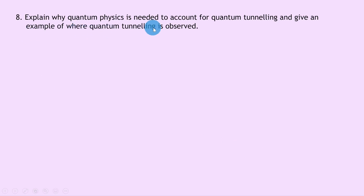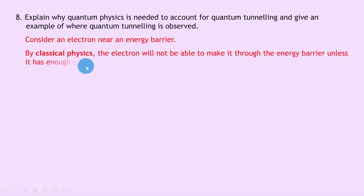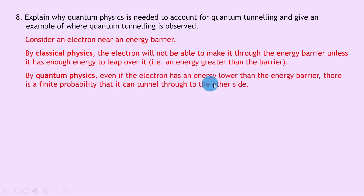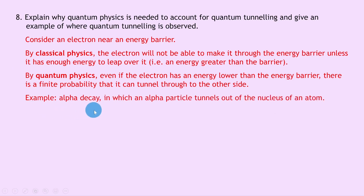Question 8 says to explain why quantum physics is needed to account for quantum tunneling and give an example of where it is observed. Consider an electron near an energy barrier. By classical physics, the electron will not be able to pass through the barrier unless it has enough energy to leap over it — i.e., an energy greater than the potential energy barrier. By quantum physics, however, even if the electron has energy lower than the barrier there is a finite probability it can tunnel through to the other side, because in quantum physics we treat the electron as a wave function rather than a particle. An example is alpha decay, in which an alpha particle tunnels out of the nucleus of an atom even though it doesn't have sufficient energy to escape classically.